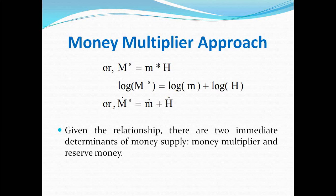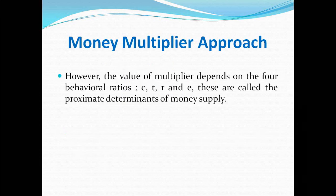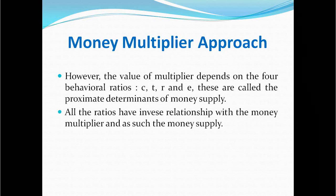The multiplier approach can also be expressed in growth form. Taking logs on both sides, the equation becomes: growth of money supply equals growth of multiplier plus growth of base money. There are thus two immediate determinants of money supply: the money multiplier and reserve money. The money multiplier depends on the four ratios — C, T, R, and E — called the approximate determinants of money supply. All four ratios have an inverse relationship with the money multiplier and hence with money supply: if any ratio increases, the multiplier falls and money supply decreases.